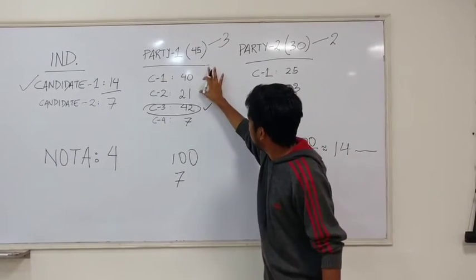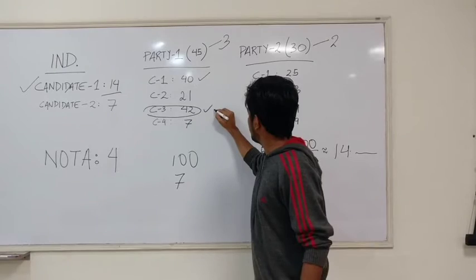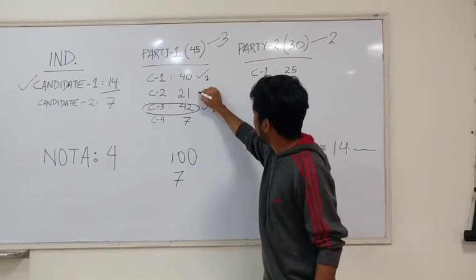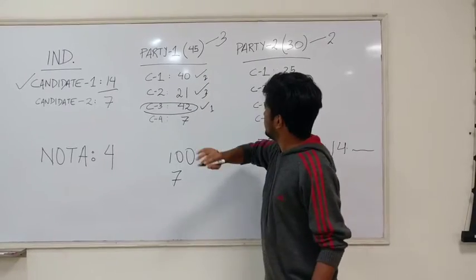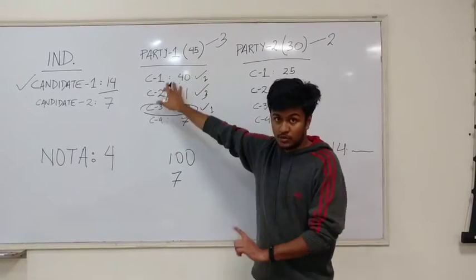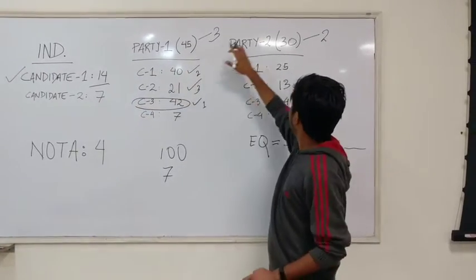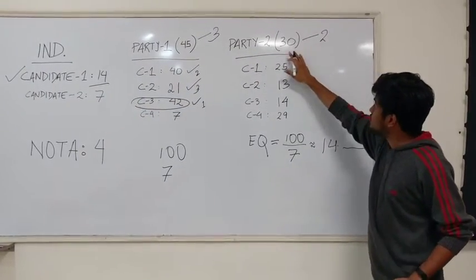Next in line is candidate 1 with 40 votes. So this is one, this is two and finally candidate 2 who's gotten 21 votes gets the third seat.